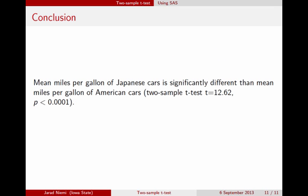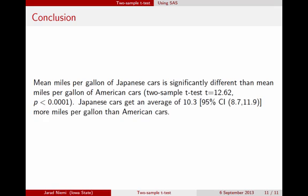If we were going to write this up as a statistical conclusion, we might write it as: the mean miles per gallon of Japanese cars is significantly different than mean miles per gallon of American cars, using a two-sample t-test with a test statistic of 12.62 and a p-value of 0.0001. Additionally, Japanese cars get an average of 10.3 more miles per gallon than American cars, with a 95% confidence interval between 8.7 and 11.9.